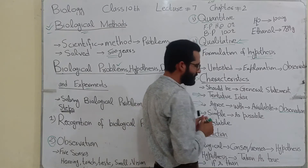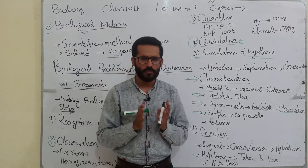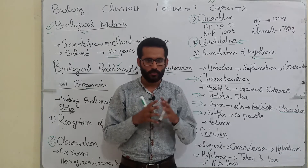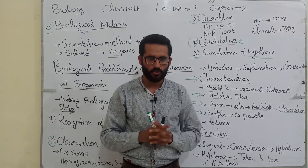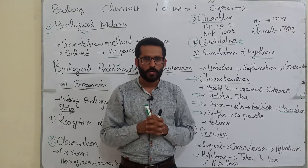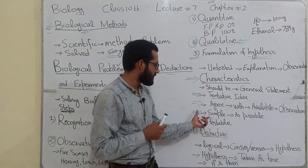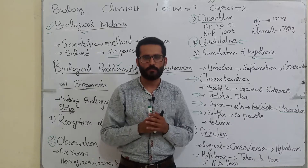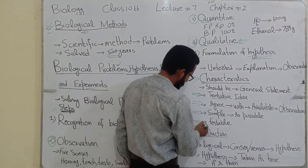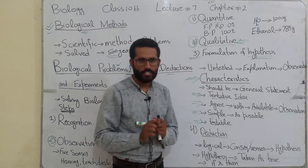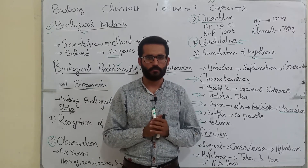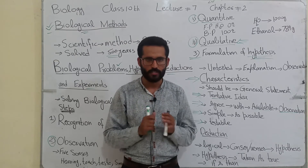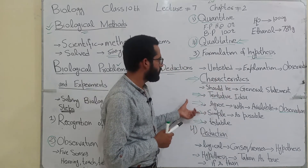It should be as simple as possible — yeh easy hona chahiye. Complex nahi hona chahiye kyunki agar complex hoga to hamaara experiment wrong ho sakta hai. Hypothesis ke baad hum isko test karte hain — kya results sahi aate hain jo humne hypothesis banaya hai — is wajah se it should be simple as possible taki hum isse easily test bhi kar sakein. Number 5: it should be testable — iska experiment kiya ja sake aur woh easily kiya ja sake. These are the characteristics of hypothesis.